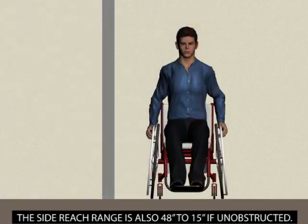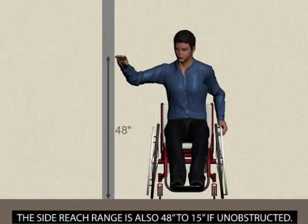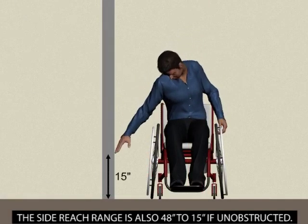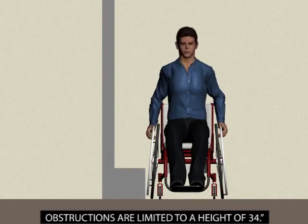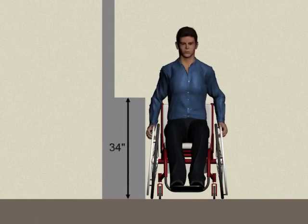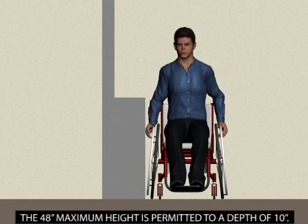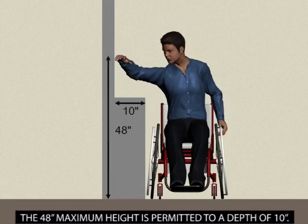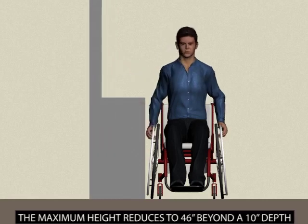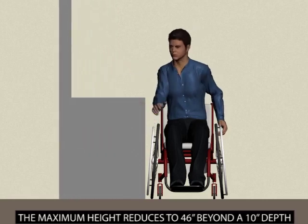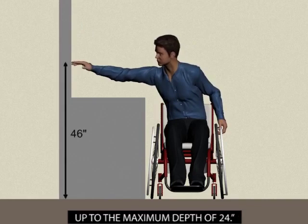The side reach range is also 48 inches to 15 inches if unobstructed. Obstructions are limited to a height of 34 inches. The 48 inch maximum height is permitted to a depth of 10 inches. The maximum height reduces to 46 inches beyond a 10 inch depth up to the maximum depth of 24 inches.